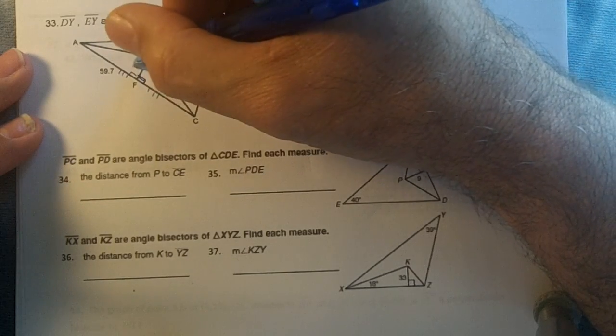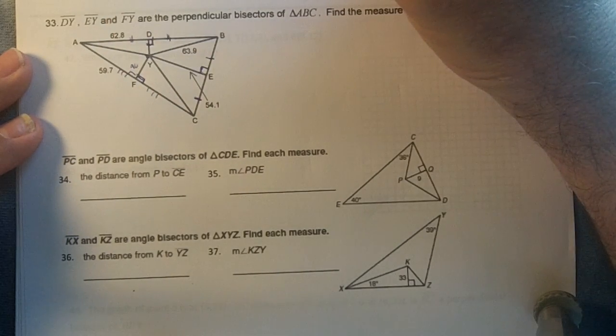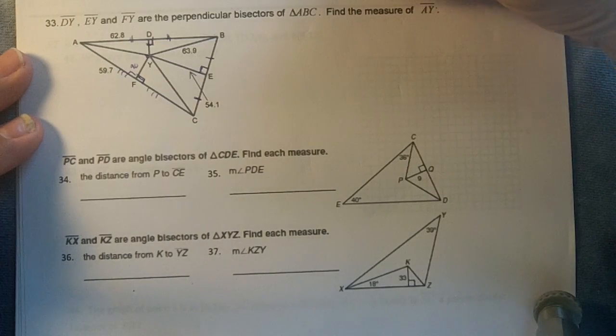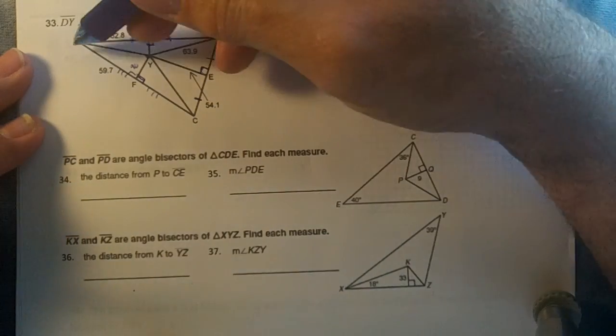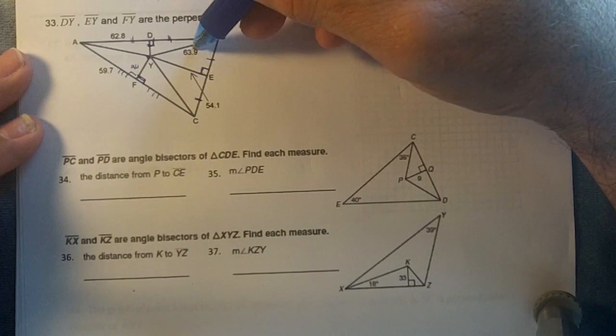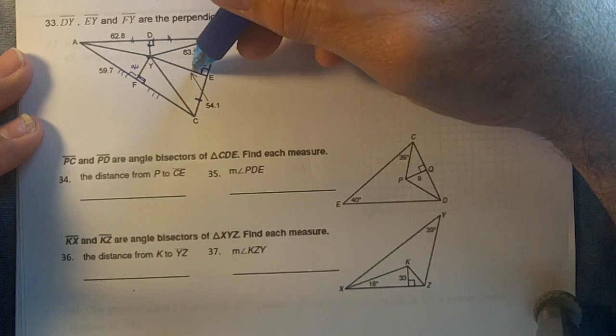This is 90 degrees. ABC, find the measure of AY: 63.9, 54.1.